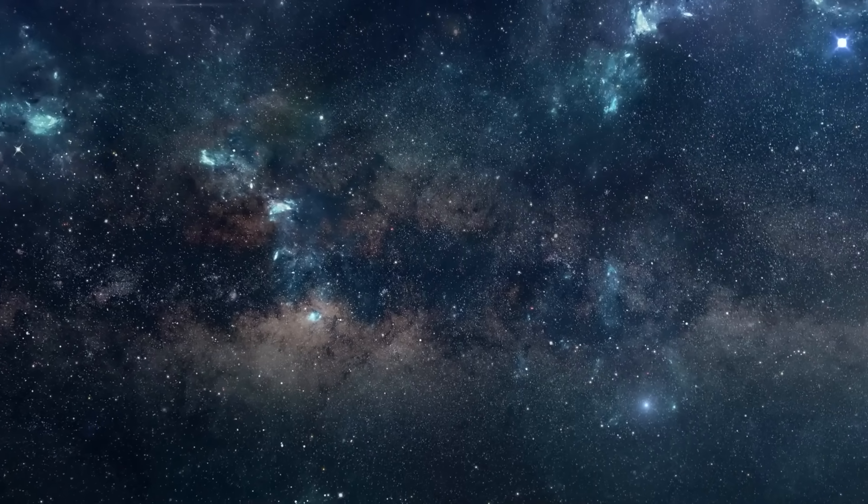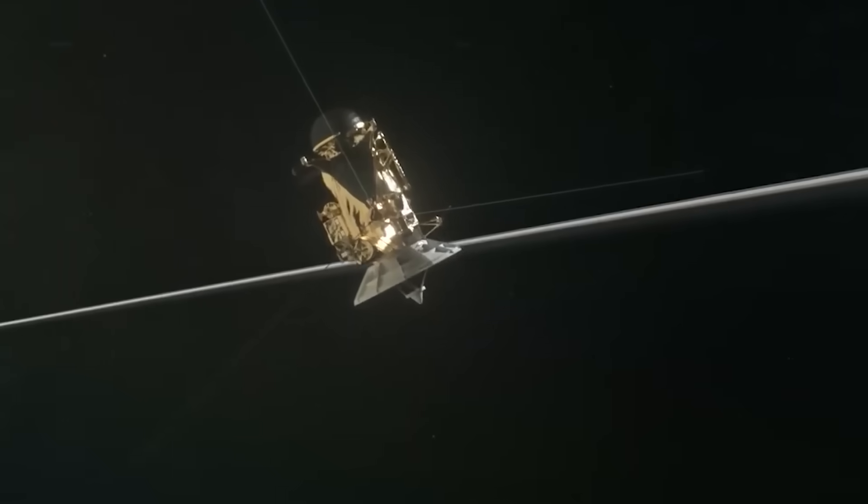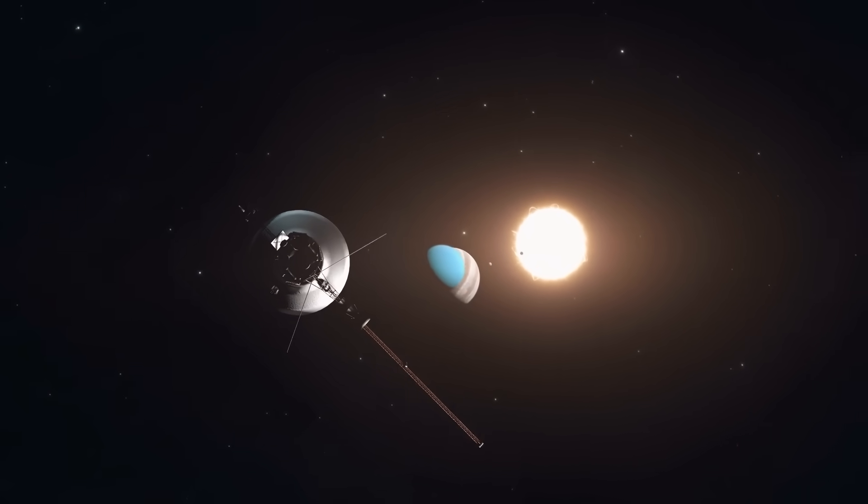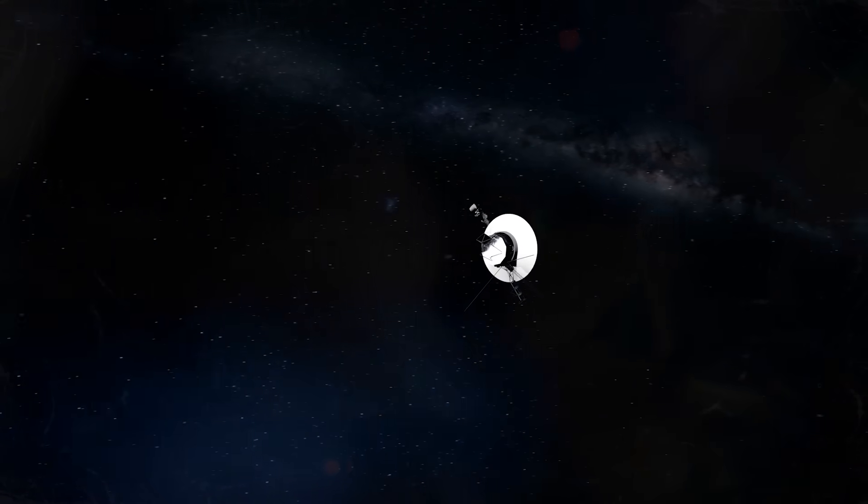On May 20th, 2025, a signal from 15 billion miles away saved a 47-year-old mission. NASA engineers miraculously fired up Voyager 1's backup thrusters, which had been dormant for decades. This was hailed as a genius fix to save the probe from going dark forever.